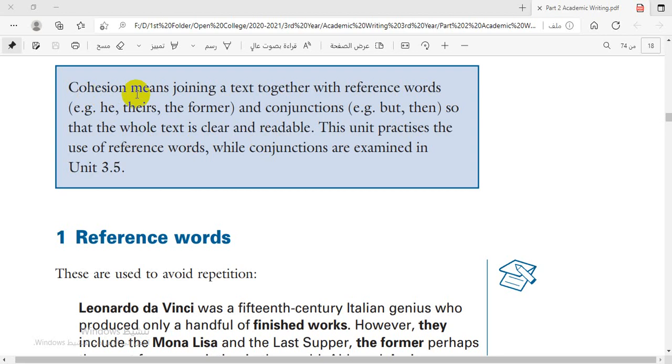Let us read this text and we are going to show you what is the meaning of cohesion. First of all, follow me. Cohesion means joining a text together with reference words, example he, there, the former, and conjunctions, example but, then, so that the whole text is clear and readable. This unit practices the use of reference words while conjunctions are examined in unit 3.5.